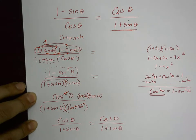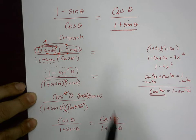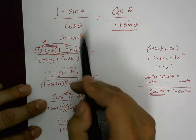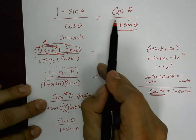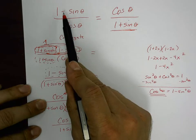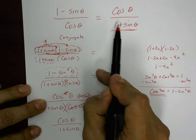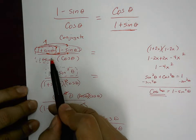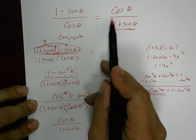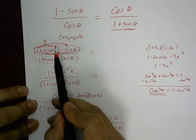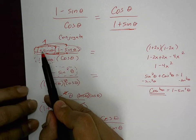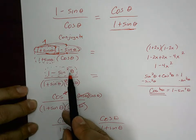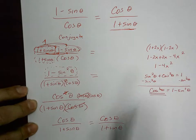This technique is called multiplying by the conjugate. How do you know when to use it? When you notice that your numerator is very similar to the denominator — the only difference is one says one minus something and the other says one plus the same thing. You multiply both the numerator and denominator by the conjugate so that one plus sine times one minus sine, or one plus cosine times one minus cosine, gives you one minus sine squared or one minus cosine squared theta, which you can replace using the Pythagorean identities.